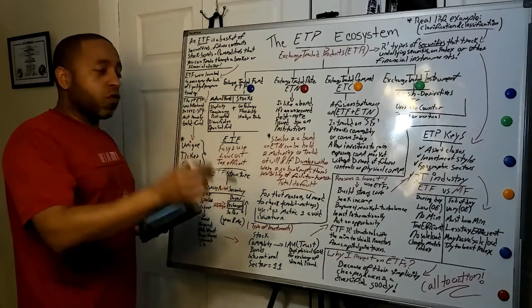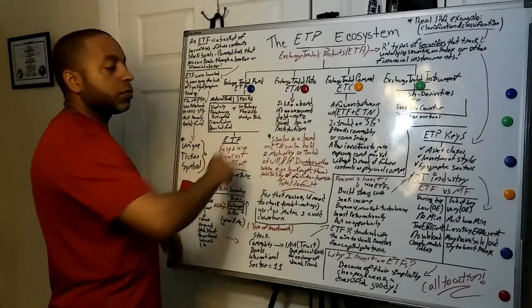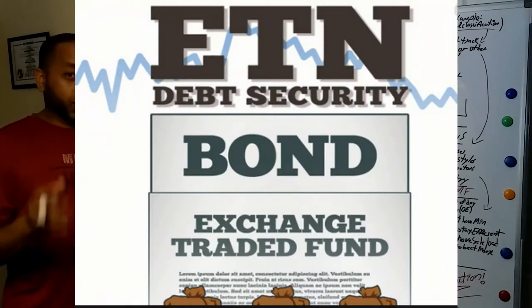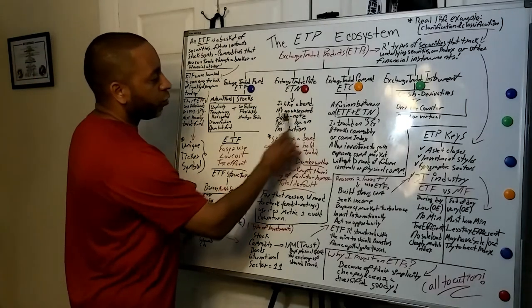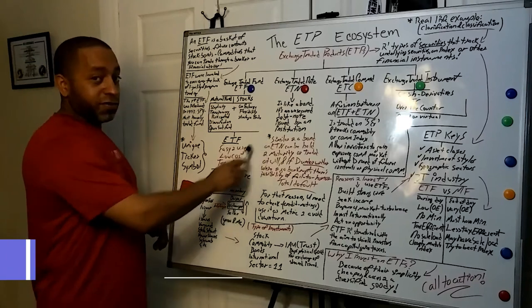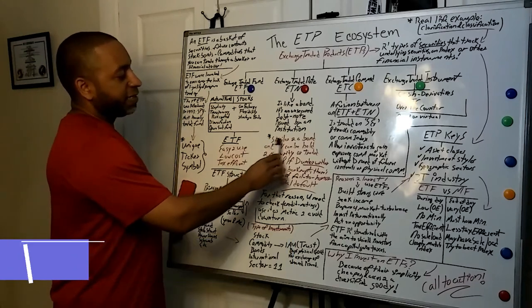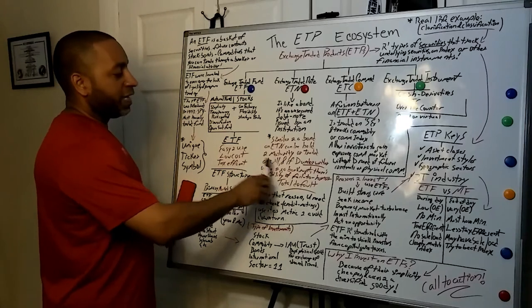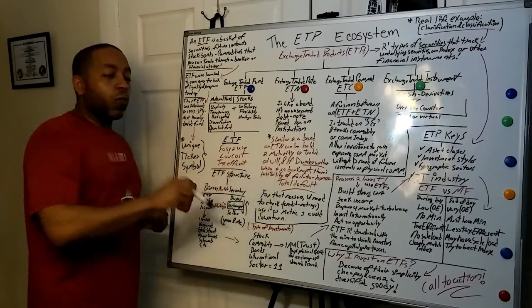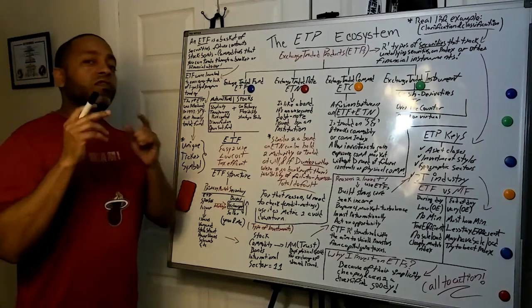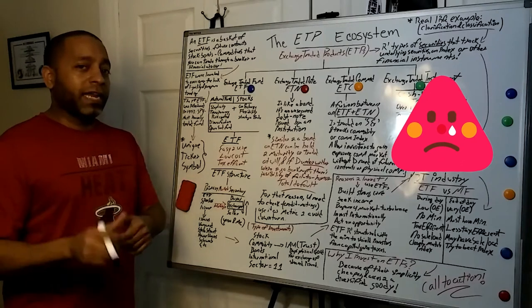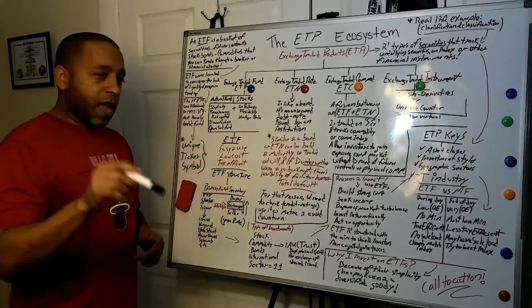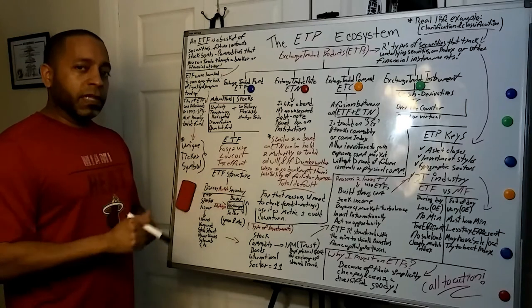Y'all see me bringing out the Dragonfly board. Make sure that y'all have your pen and paper ready. I told you we're going to regulate. Now, the other two bonuses I'm going to give you at the end of the video. So yeah, stay tuned until the end. Hey guys, ETP ecosystem, exchange traded products. Definition: types of security that track the underlying securities, an index or other financial instruments.